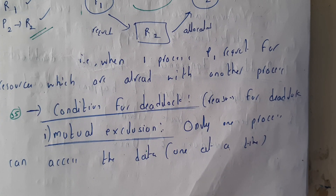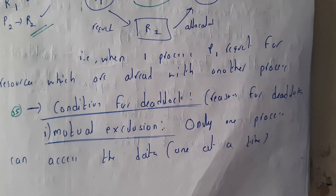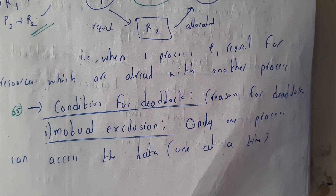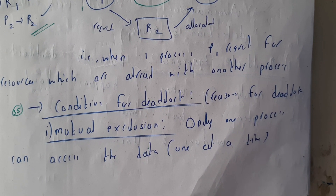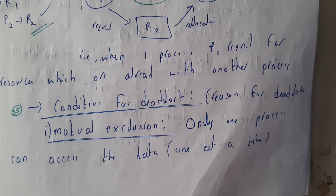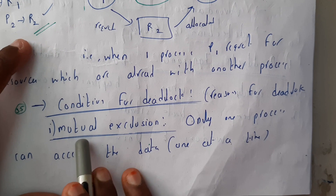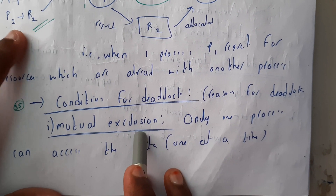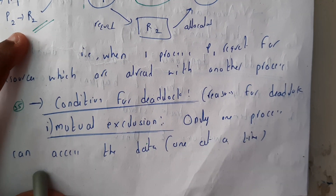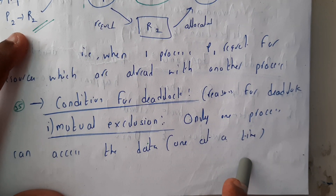Hello guys, we are back with our next tutorial. In this tutorial, let us go through the conditions of deadlock — what are the reasons or how a deadlock occurs. The first condition is mutual exclusion, that is, only one process can access the data at one moment of time.